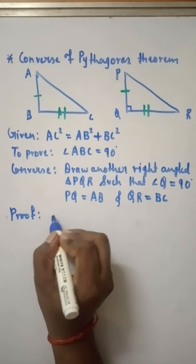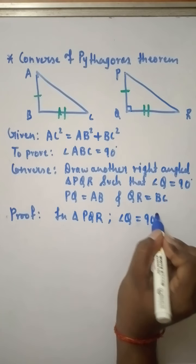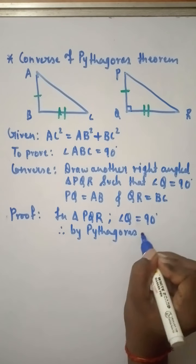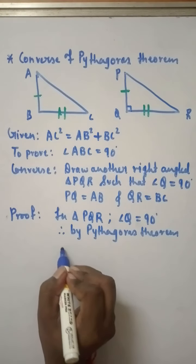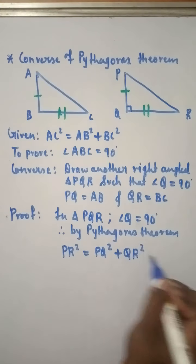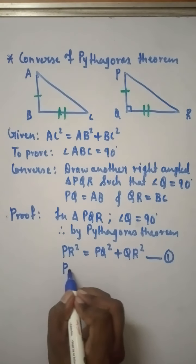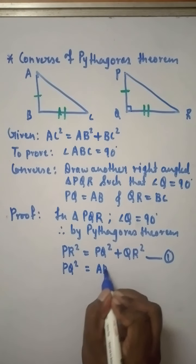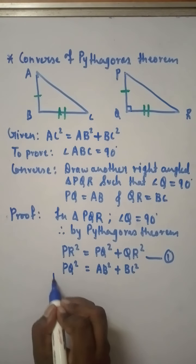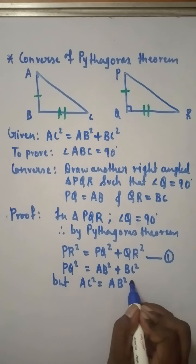In triangle PQR, angle Q = 90°. Therefore by Pythagoras theorem we can write: PR² = PQ² + QR². Let's call this equation (1). But PQ = AB and QR = BC from our construction, so PR² = AB² + BC².